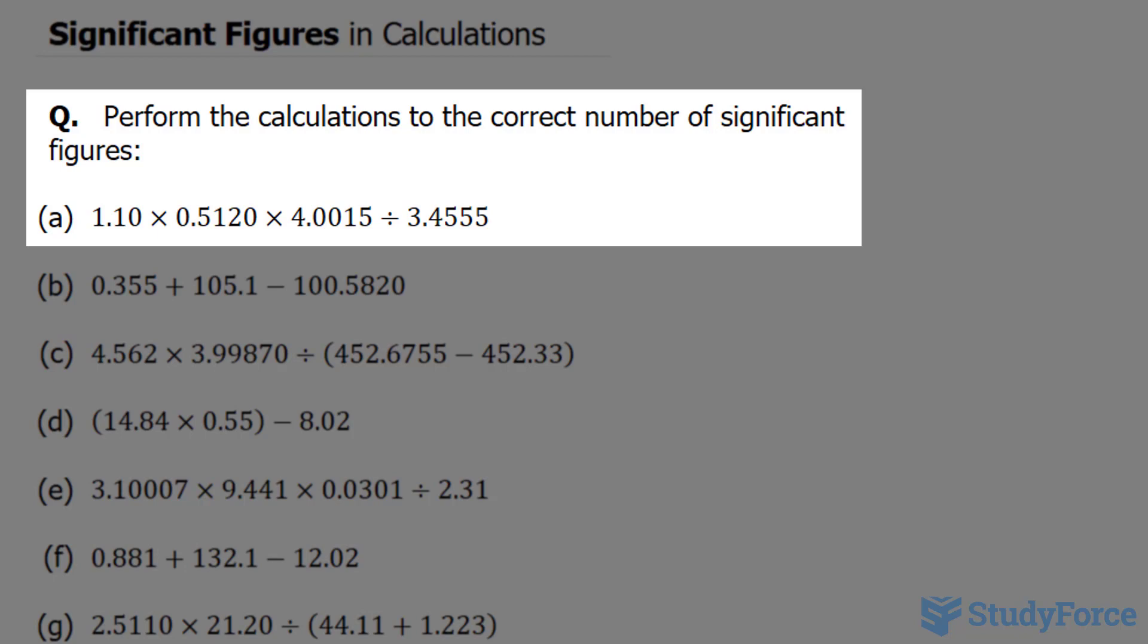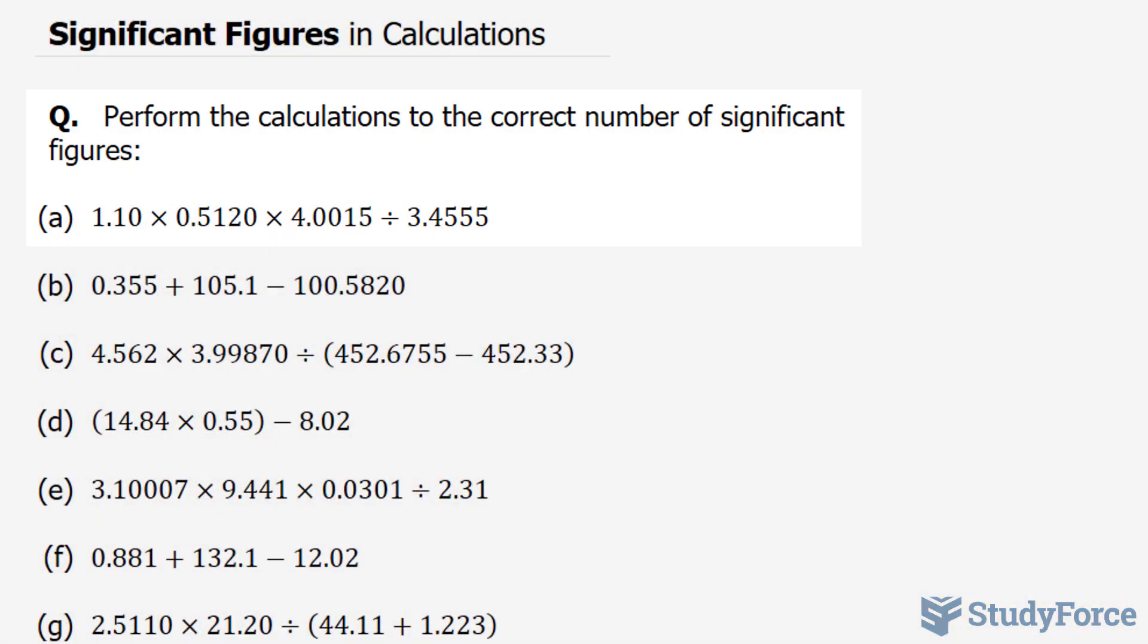In question A, we're expected to multiply these three numbers and then divide by 3.4555. This has three significant figures, this has four, this has five, and this also has five.